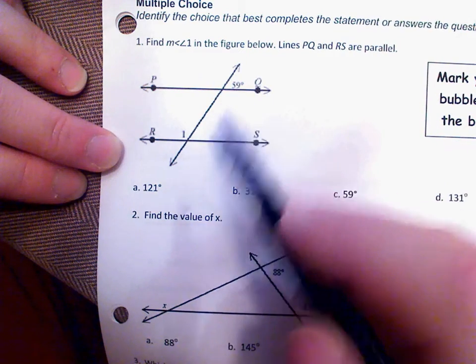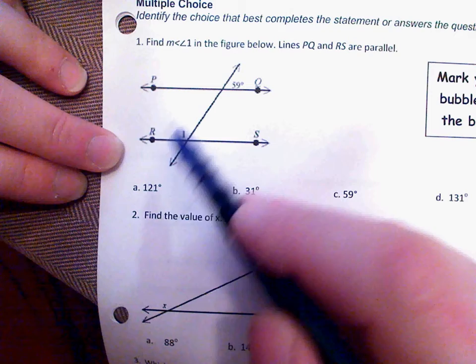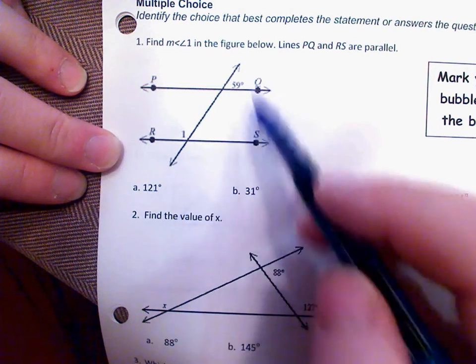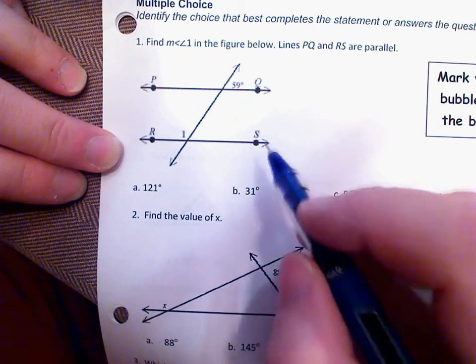So when we have parallel lines that are cut by a transversal, remember we have all these special angle pairs that have a special relationship.